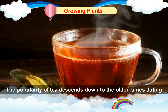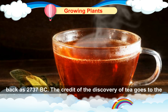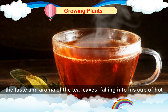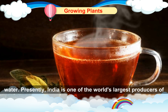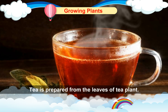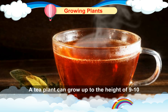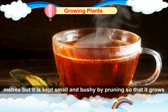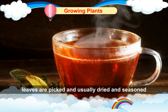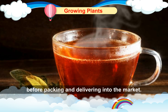Origin of tea. The popularity of tea dates back to as early as 2737 BC. The credit of the discovery of tea goes to the second emperor of China, Shen Nang, who accidentally discovered the taste and aroma of tea leaves falling into his cup of hot water. Presently, India is one of the world's largest producers of tea, with close competition with China. Assam is the birthplace of tea in India. Tea is prepared from the leaves of the tea plant. A tea plant can grow up to a height of 9–10 meters but it is kept small and bushy by pruning so that it grows more leaves sideways. Tea leaves are picked and usually dried and seasoned before packing and delivering into the market.